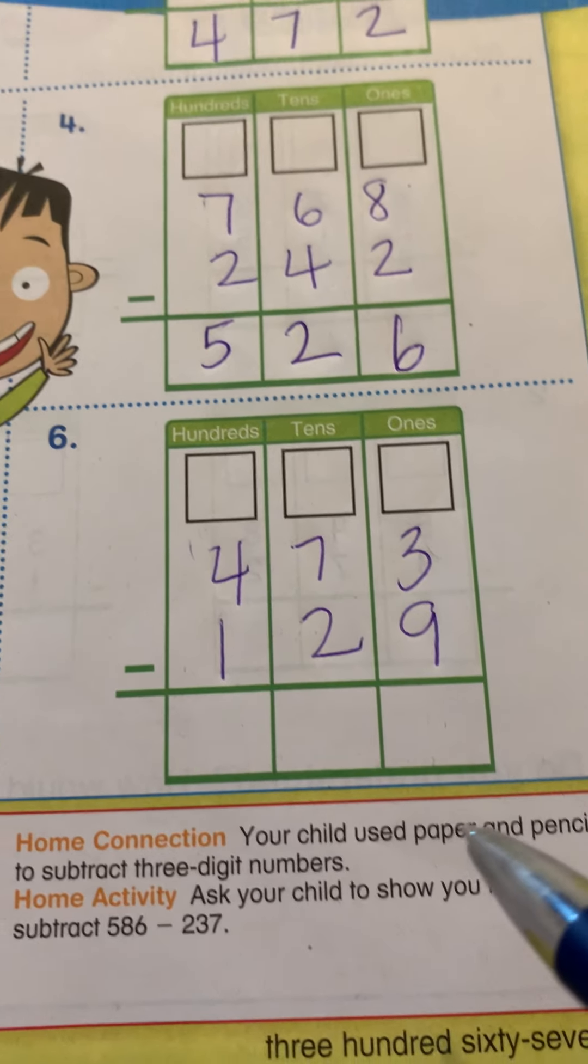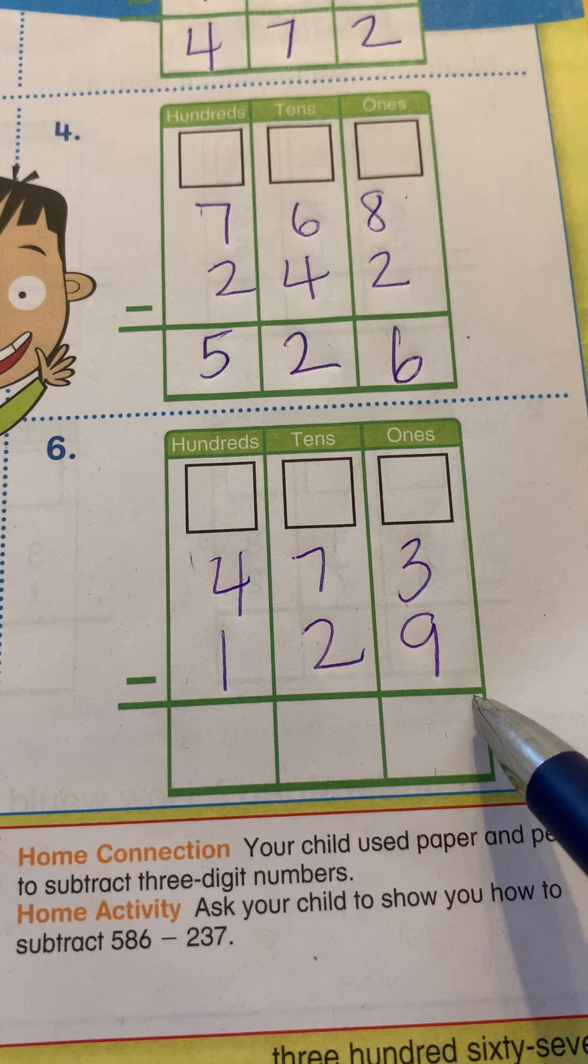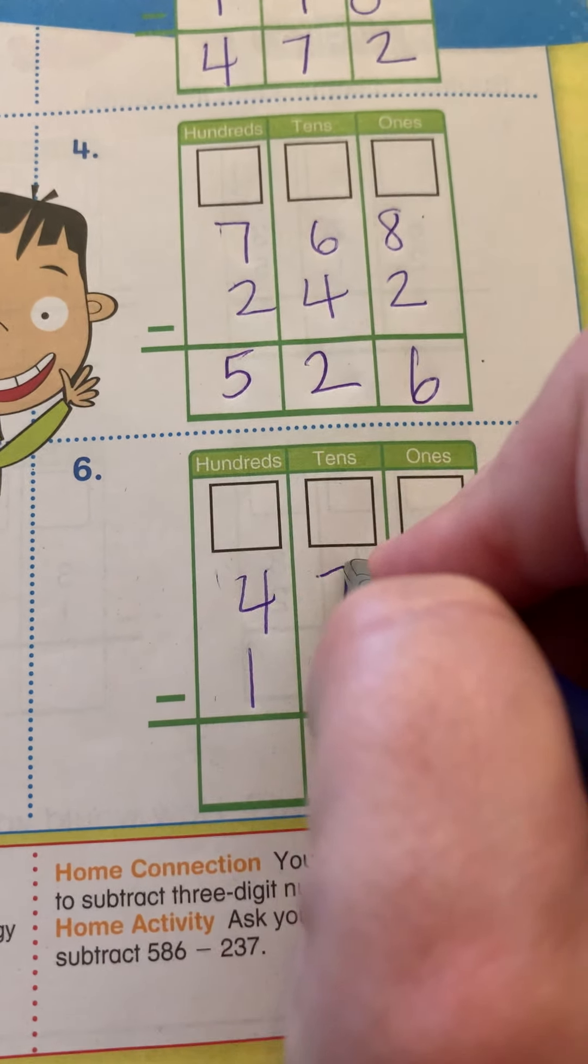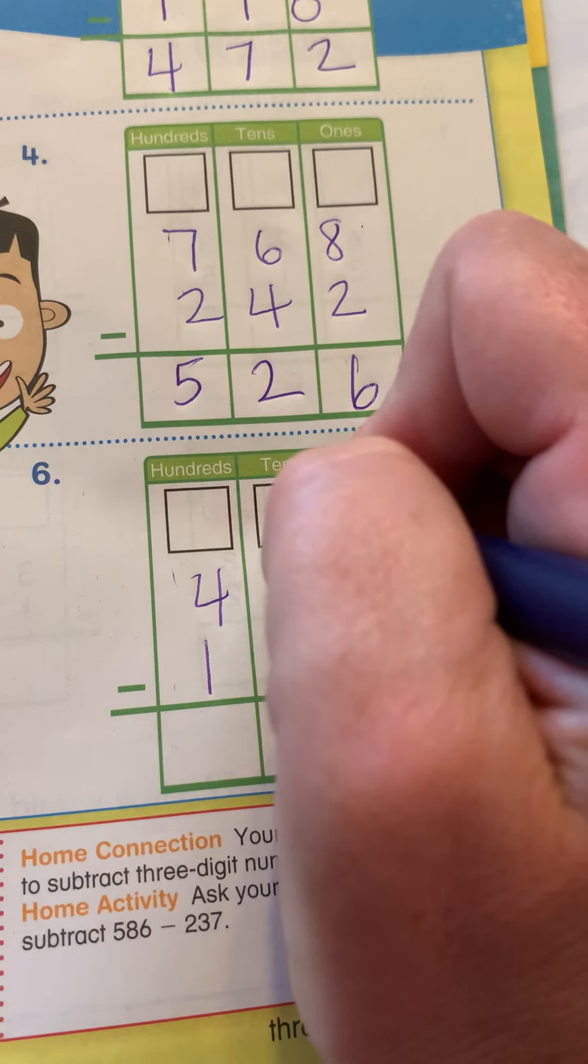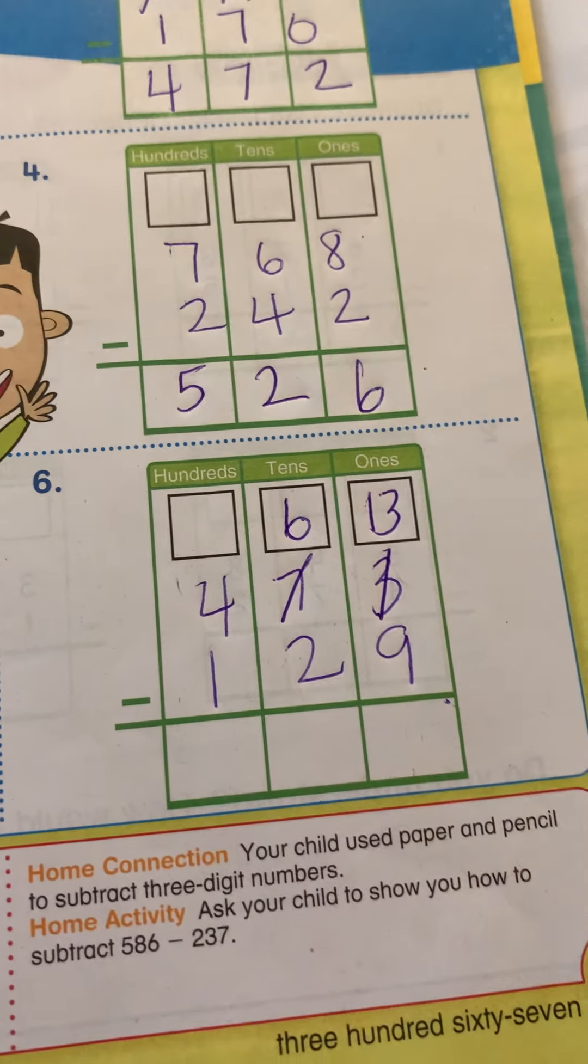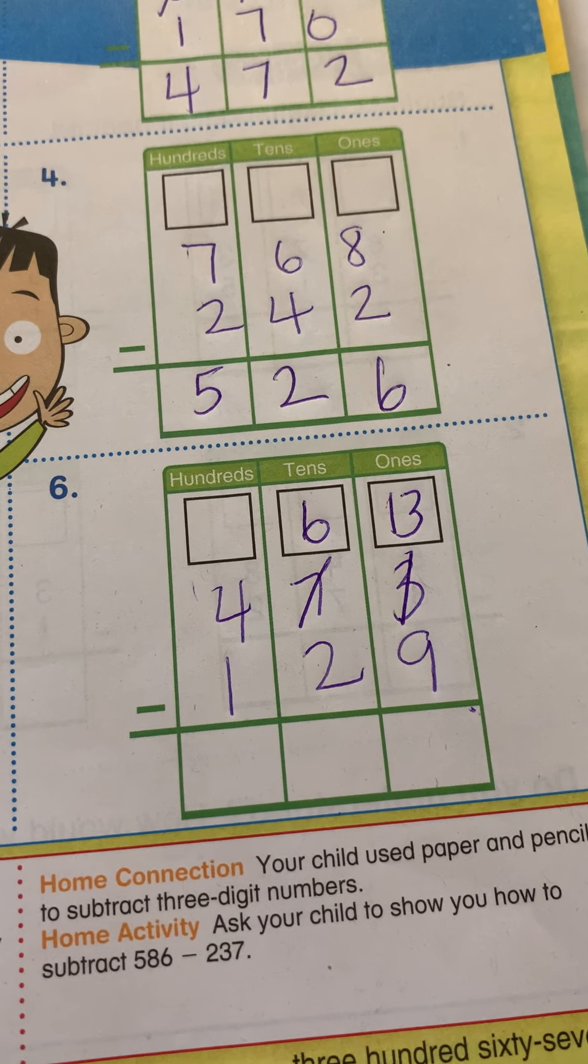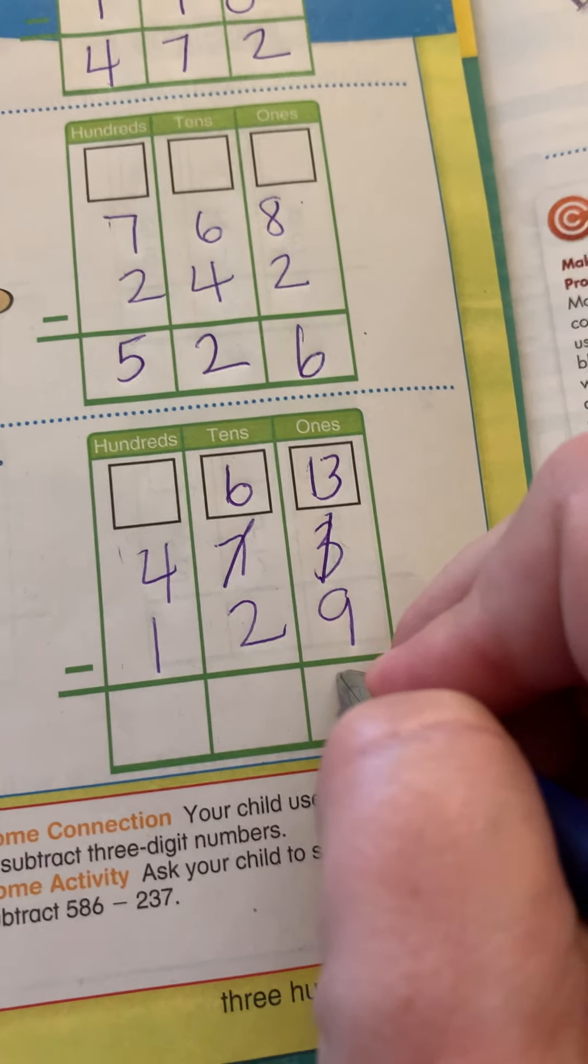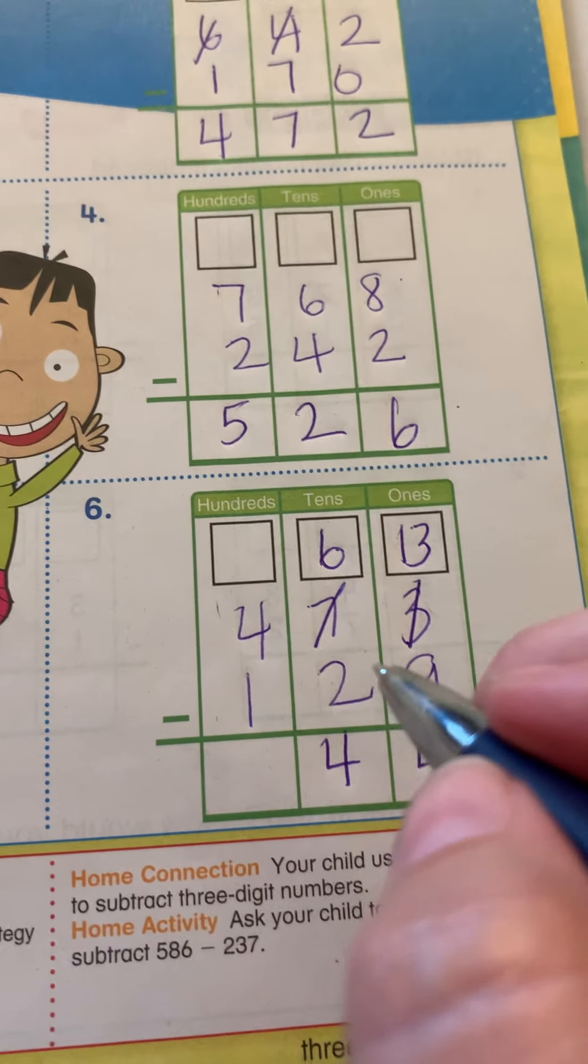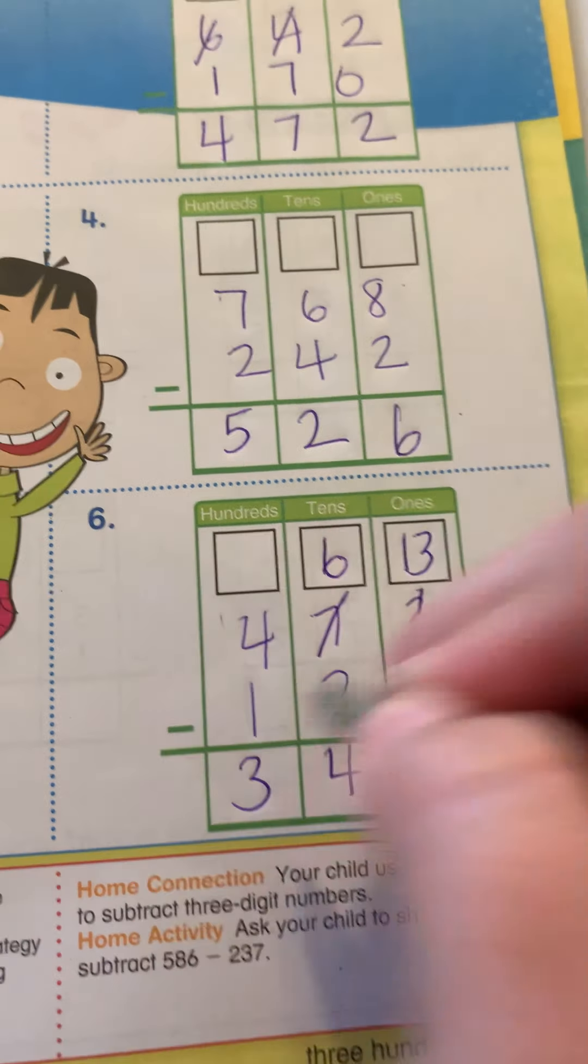And number six. Three minus nine. I can't. So I have to cross off the seven, make it a six and put the one in front. So it becomes 13. So 13 minus nine is four. Six minus two is four. And four minus one is three.